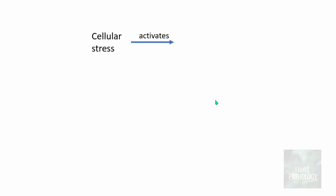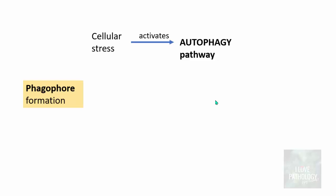Whenever there is a cellular stress, this activates the autophagy pathway. There are a few important things to remember at this point. One is the formation of a phagophore. What is a phagophore? A phagophore is just an isolation membrane.